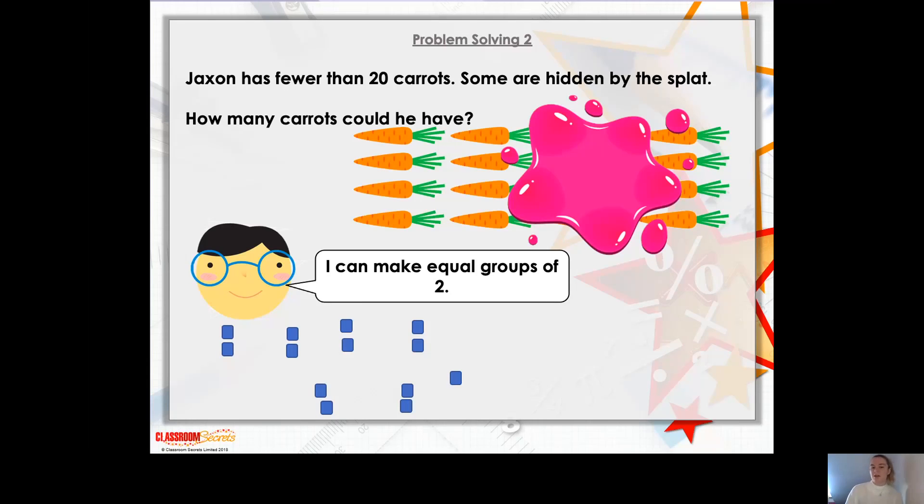What about 14? Let's try. Let's see the carrots for that. There you go. So I put them in equal groups of two. Are they equal? Well, yes, they are because there's two in each group. And there's not one carrot on its own. So therefore it could be 14, couldn't it?